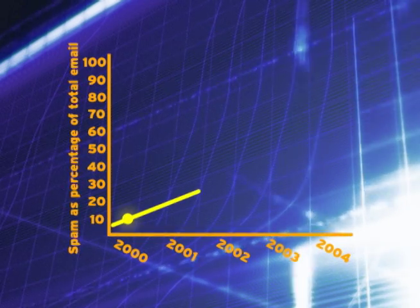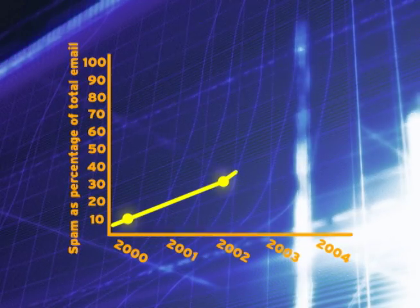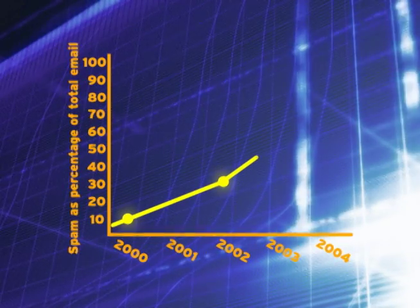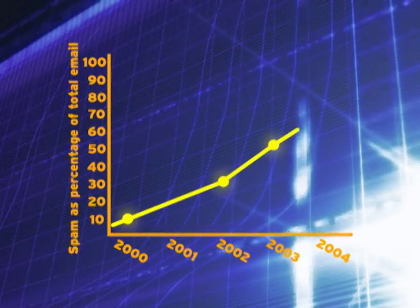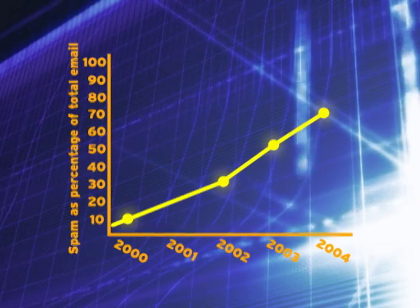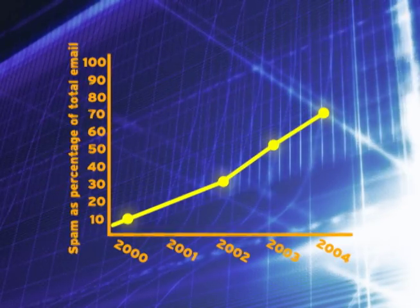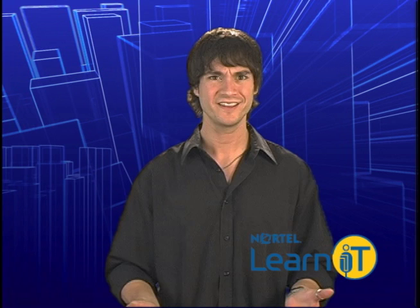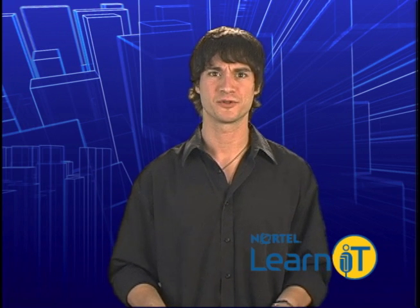Two years later, it had climbed to 30%. And by the end of 2004, spam constituted as much as 70% of email worldwide. And sadly, it's still perfectly legal in most places.